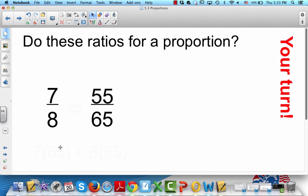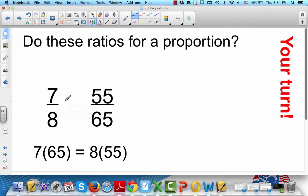So we go 7 times 65. Do I have it? Yes, I do. 7 times 65 equals 8 times 55. We just do the cross products: 8 times 55, 7 times 65.